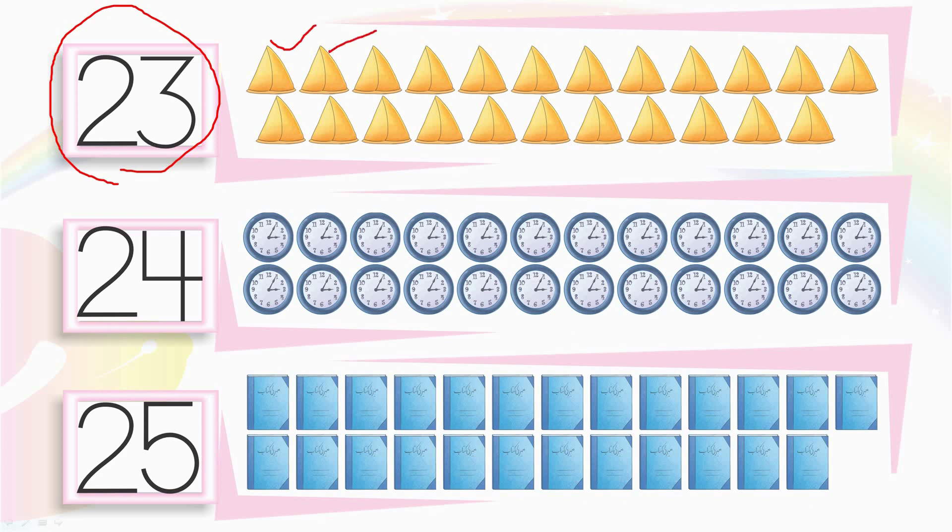1, 2, 3, 4, 5, 6, 7, 8, 9, 10, 11, 12, 13, 14, 15, 16, 17, 18, 19, 20, 21, 22 and 23. Two tens and three ones make 23.